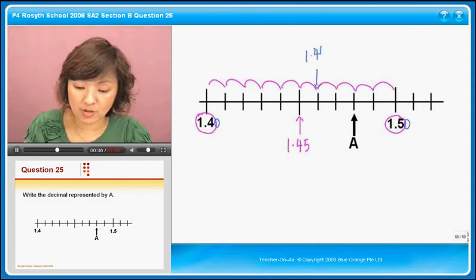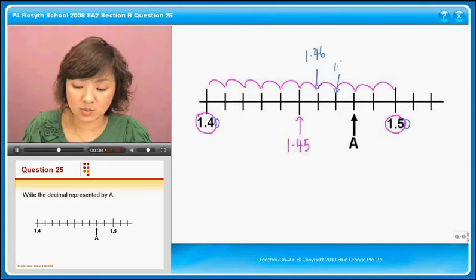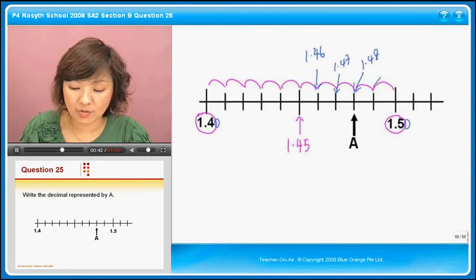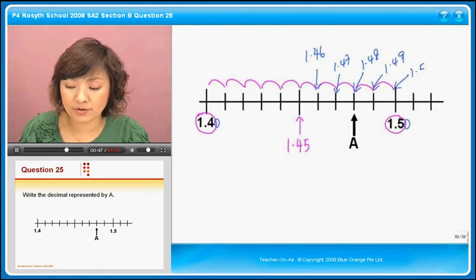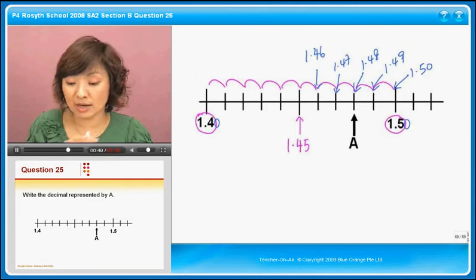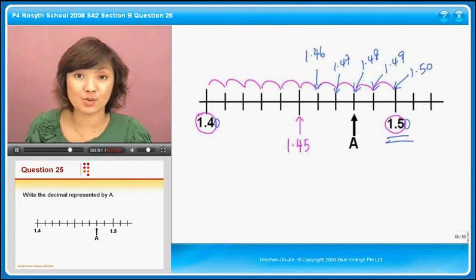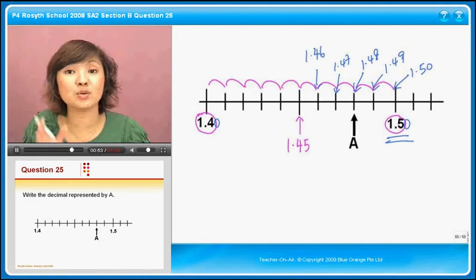this must be 1.46, then this is 1.47, this is 1.48, this is 1.49, and this is 1.50. You must arrange it all the way to 1.50, or the other way, because then you'll make sure that you're right.